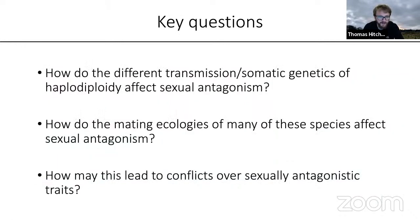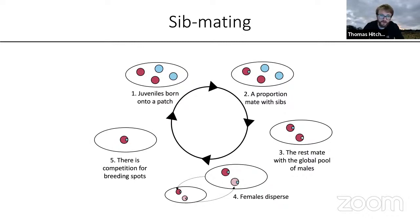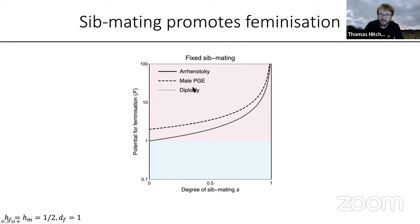We can simplify by plotting just the female-beneficial boundary — the 'potential for feminization.' Values above one indicate genome feminization; below one indicates masculinization. Turning to how mating ecologies alter sexual antagonism, we devised a simple life cycle: juveniles are born onto a patch, a proportion S of females mate with their sibs, and the rest mate with the global male pool before dispersing. As we increase the amount of sib mating, we see increasing feminization under arrhenotoky, male PGE, and diploidy alike.